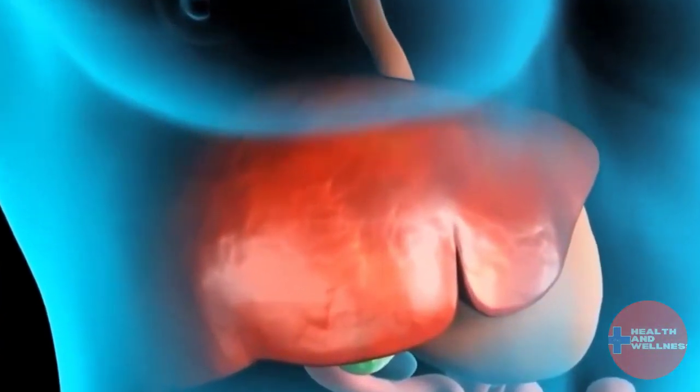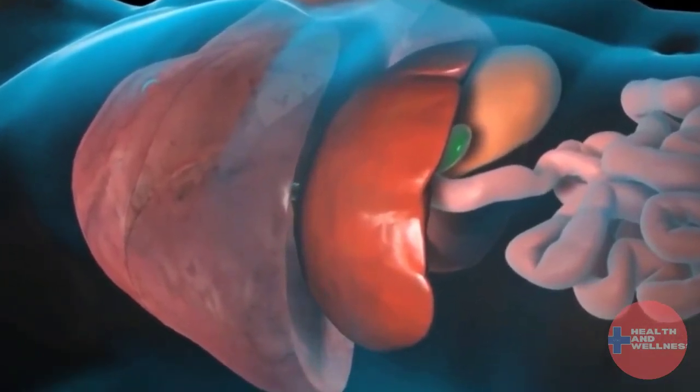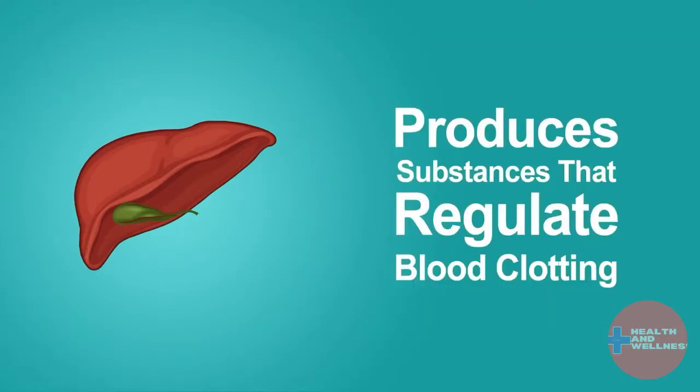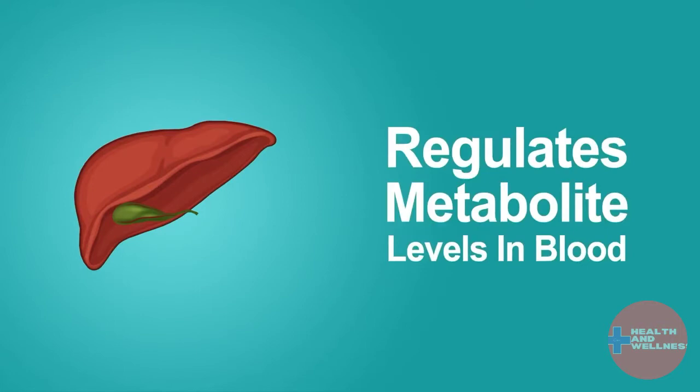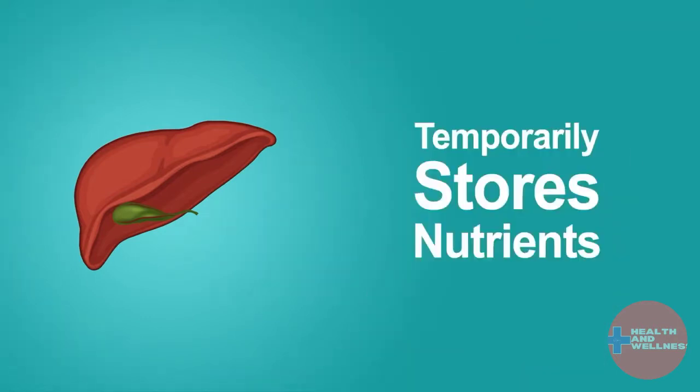The liver is the largest internal organ and the largest gland in the human body. One way to understand how important it is: if the liver stops working, you can survive less than 24 hours. The acid builds up and you die of acidosis and metabolic failure.